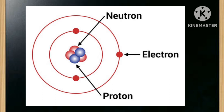Every atom consists of a heavy central portion called the nucleus, containing neutrons and protons. Protons are positively charged and neutrons are neutral. Lighter particles called electrons, which are negatively charged, revolve around the nucleus. In normal condition, in an atom the number of electrons and number of protons should be equal, so as a whole it will be neutral. Deficiency of electrons means the object is positively charged, and excess electrons means the object is negatively charged.